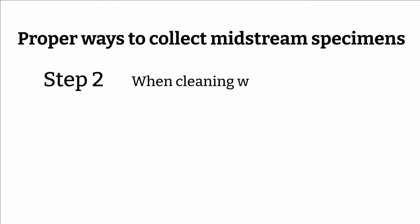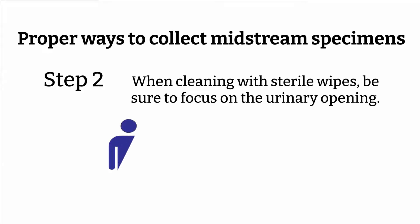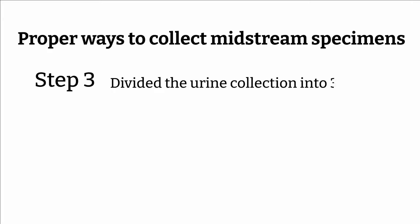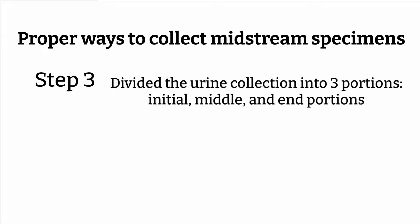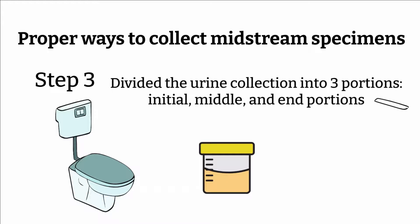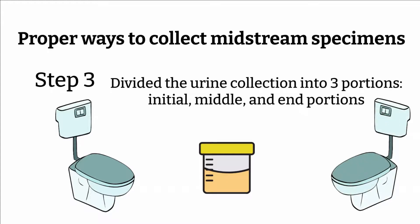When cleaning with the sterile wipe, be sure to focus on the urinary opening. Men should wipe the tip of the penis; women should clean their labia from front to back. For the actual collection, we divide the urine into three parts: the initial, middle, and end portion. Avoid the initial portion — let it go down the toilet. Open the sterile container and collect the middle portion without touching the outside of the genitalia area. The end portion should also go down the toilet.